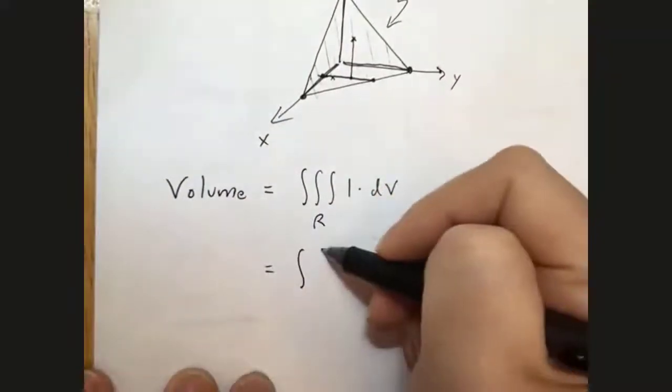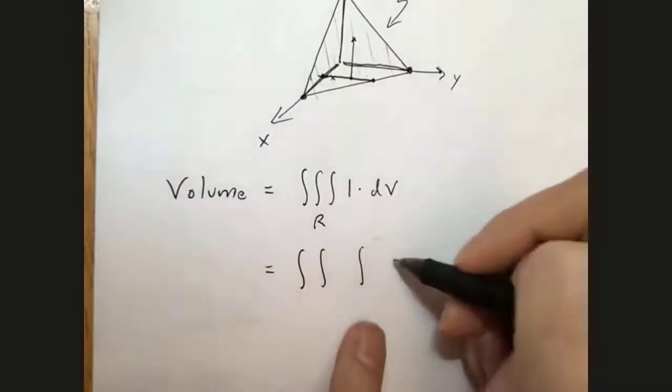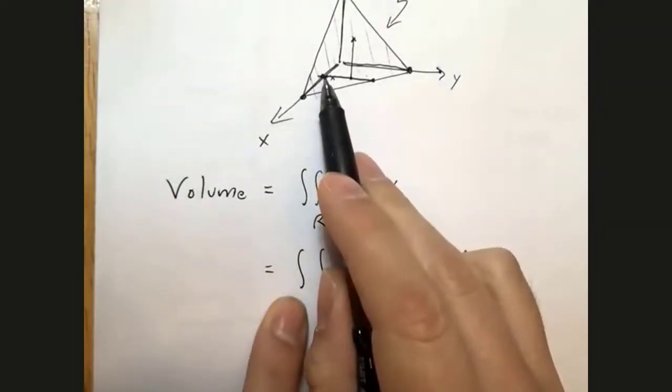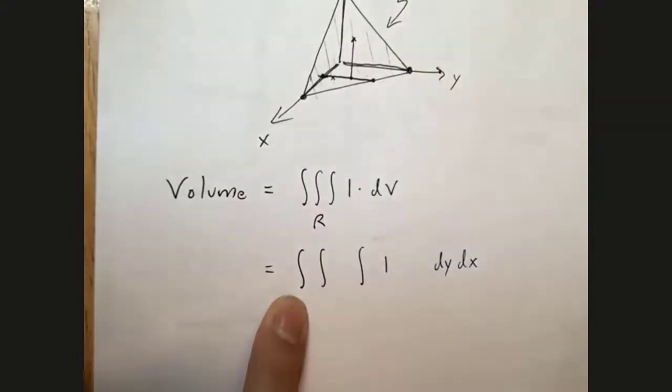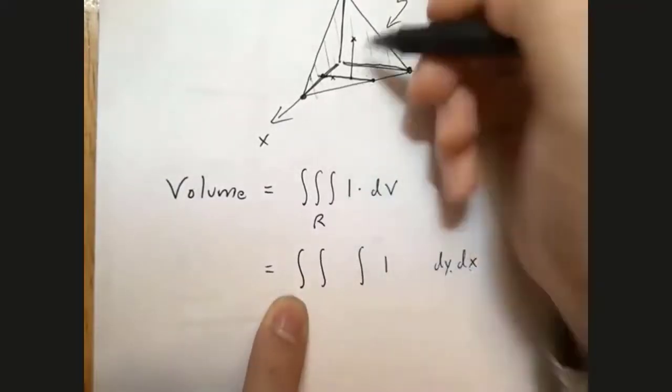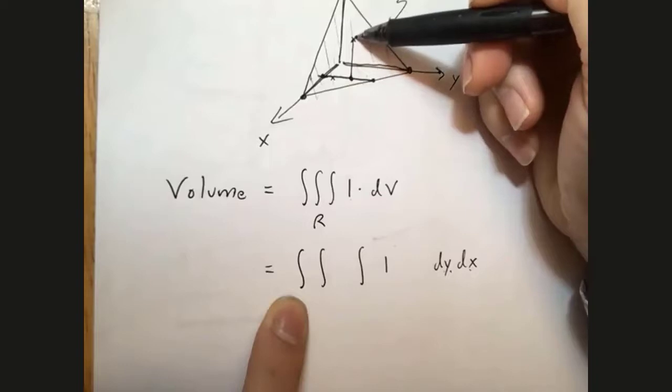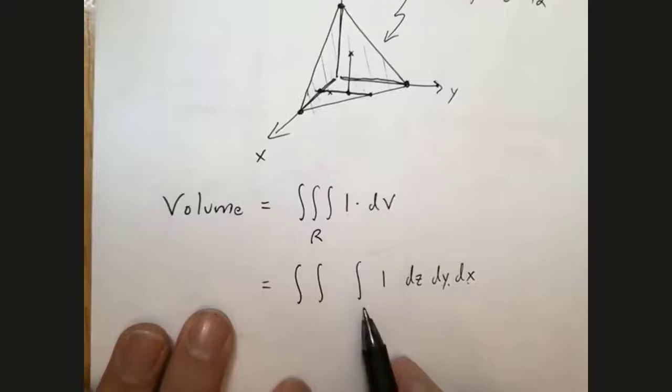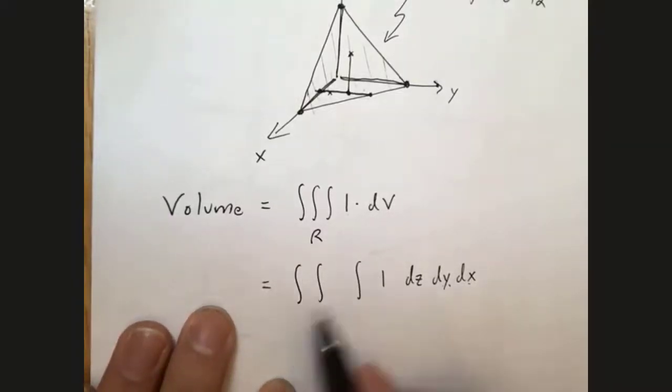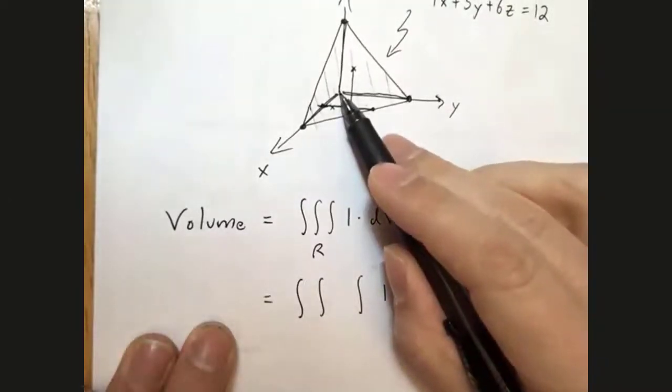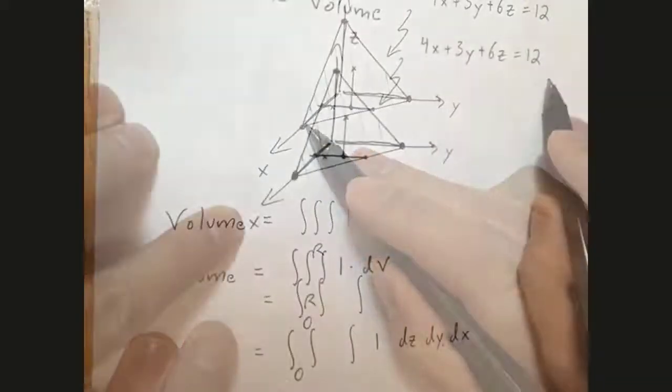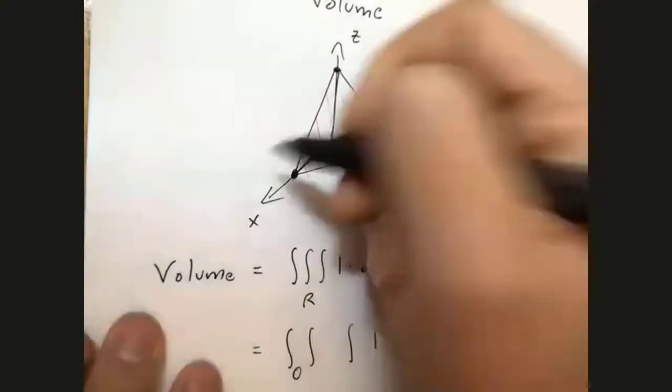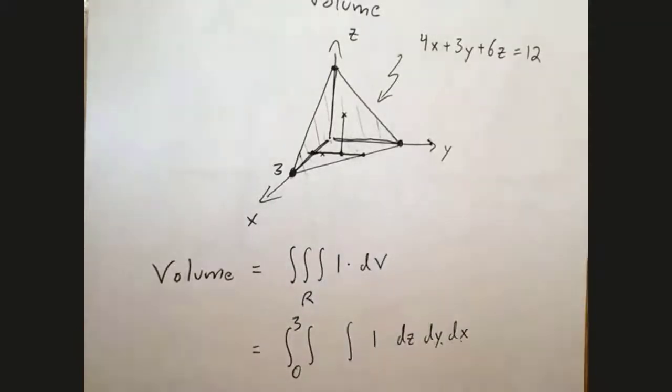We started by fixing x, so x goes on the outside. For every fixed x we integrated in the y direction, so y is next. Then for each fixed x and y, I integrated in the z direction, so z is last. You work from outside in. Now what do we put in these bounds? x is the easiest. Where do I start from? Clearly x equals 0. Where do I end? I'm on the x-axis, so y and z are 0, which means 4x equals 12, so x must be 3. x goes from 0 to 3.